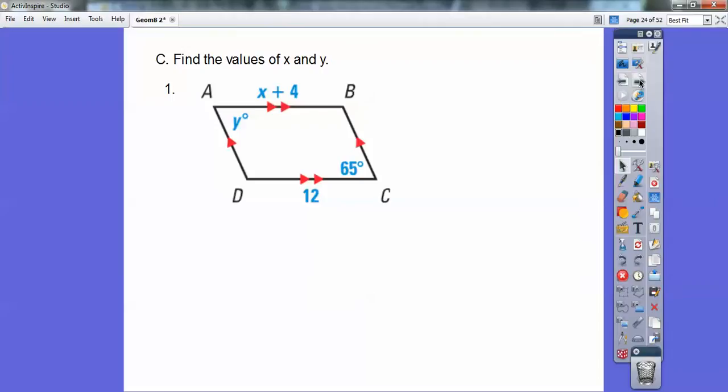Let's find the values of x and y on these. So here's a parallelogram. Opposite sides are congruent. So I'm going to say these two guys are congruent, and opposite angles are congruent. So these guys are equal also. So x plus 4 equals 12, and y equals 65. And then subtract 4 on both sides, and you get x equals 8.